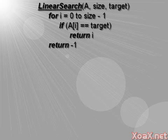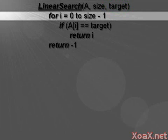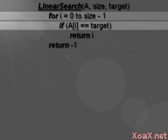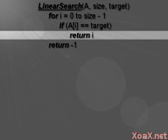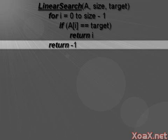Here's the pseudocode for the linear search function. The function takes three arguments: an array, its size, and the target element that we are searching for. The algorithm consists of a single loop which runs over the elements of the array and checks each to see whether it is equal to the target. If so, the index is returned. Otherwise, negative 1 is returned to indicate that the element is not in the array.